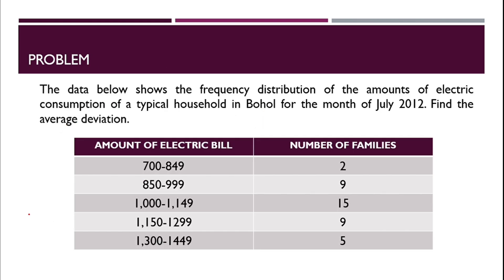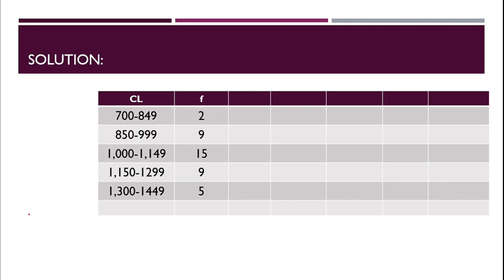Let's have a problem. The data below shows the frequency distribution of amounts of electric consumption of typical households in Bohol for the month of July 2012. Find the average deviation. Here are the amounts of electric bills and the number of families. This is a group frequency distribution. The first step is to compute the mean of the frequency distribution.